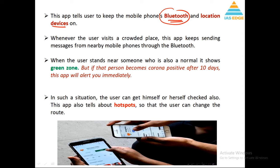Whenever a user visits crowded places, the app keeps sending messages from nearby mobile phones. Remember, you are in a crowded place with many people sitting, standing, or moving together, and everybody has the app with Bluetooth on. This allows communication among nearby phones via Bluetooth. If someone nearby is in the green zone, that's fine, but if they are a COVID patient or have a history of COVID, you will get that information.